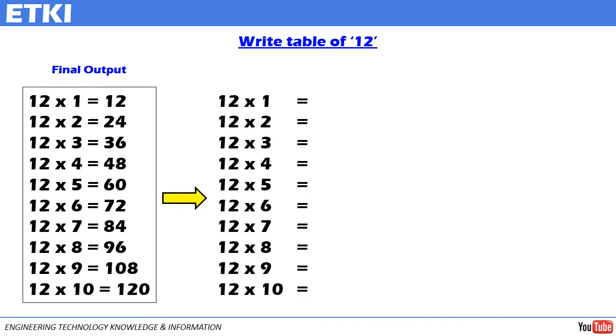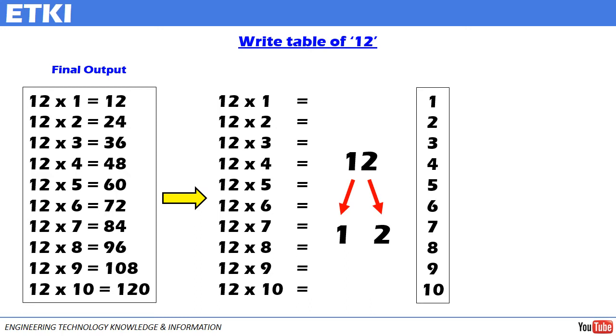I have taken 12, separated it as 1 and 2. Now, let us write the table of 1 and table of 2. Table of 1 as it is: 1, 2, 3, 4, 5, 6, 7, 8, 9, 10. Table of 2.